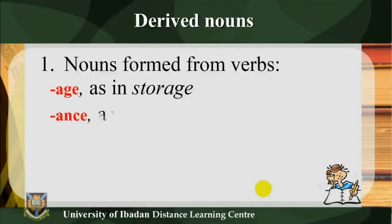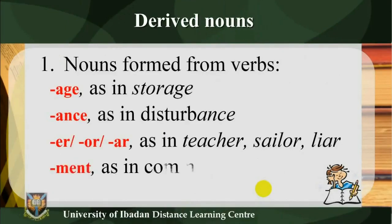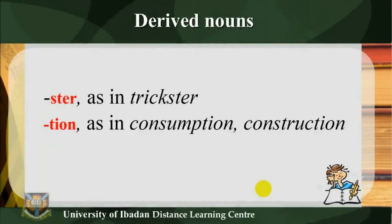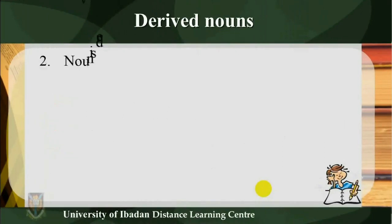Derived nouns — 1) Nouns formed from verbs. Suffixes include: -age (as in 'storage'), -ance (as in 'disturbance'), -er/-or/-ar (as in 'teacher', 'sailor', 'liar'), -ment (as in 'commandment'), -ster (as in 'trickster'), -tion/-sion (as in 'consumption', 'construction'), -ing (as in 'dancing').